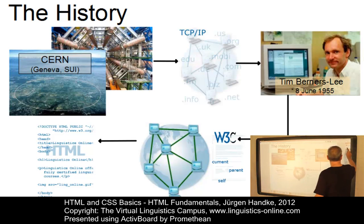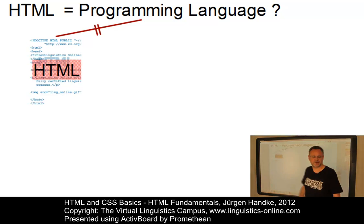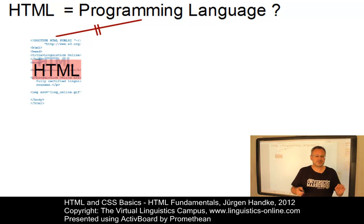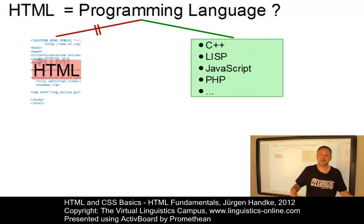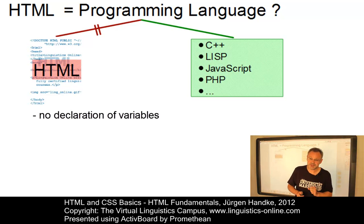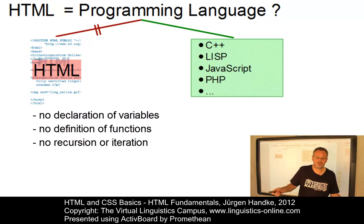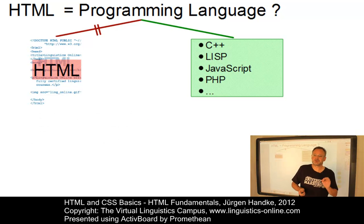But is HTML a programming language? Well, it is certainly not. Rather, it is a format that describes the structure and appearance of a document. This description is not equivalent to a computer program, especially since it may be interpreted in different ways by different web browsers. In contrast to real programming languages such as C++, Lisp, JavaScript, and PHP, HTML has no variables that can be declared, it does not allow the definition of functions, it cannot process data recursively or by means of loops, and so on. The fact that HTML writing means the development of a specific code should thus not be mixed up with a code that is used in real programming.